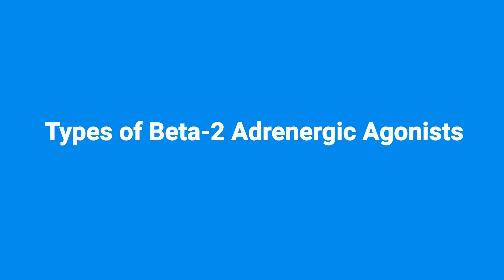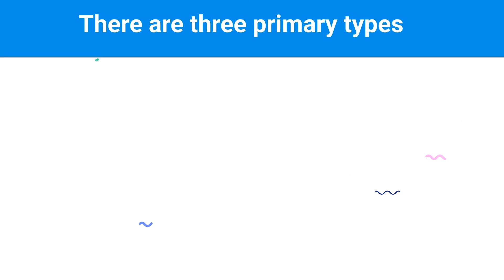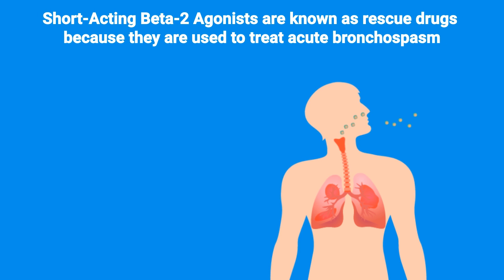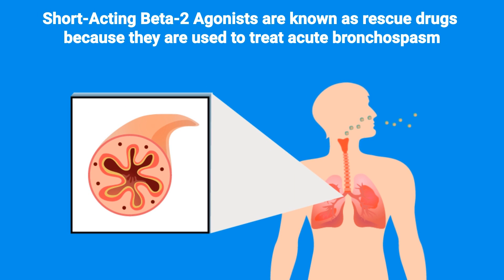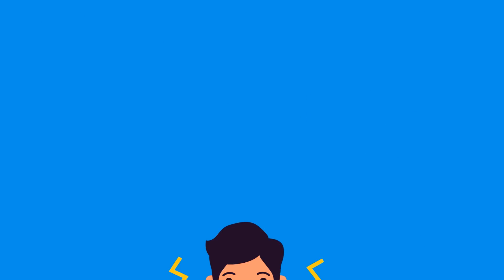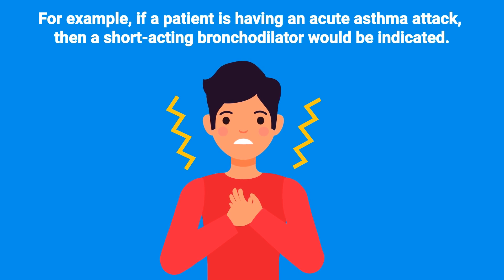Now let's talk about the types of beta-2 adrenergic agonists. There are three primary types: short-acting, long-acting, and ultra long-acting. Short-acting beta-2 agonists are known as rescue drugs because they are used to treat acute bronchospasm. For example, if a patient is having an acute asthma attack, then a short-acting bronchodilator would be indicated.